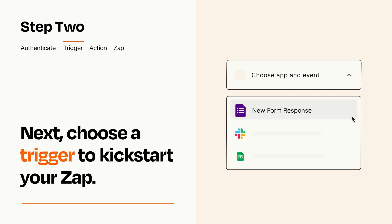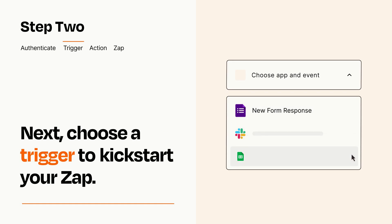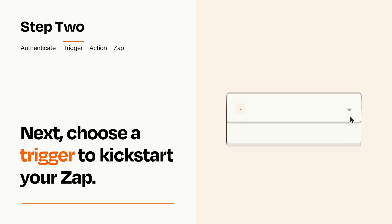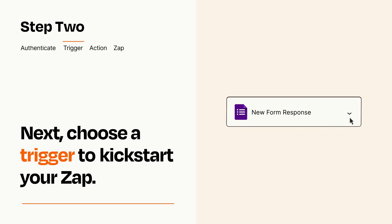Now let's set up your trigger, which is the event that starts your Zap. Pick the trigger event that you want from the list. When you set up this step, your Zap will pull in test data from your trigger app that you'll see later when setting up your action app.